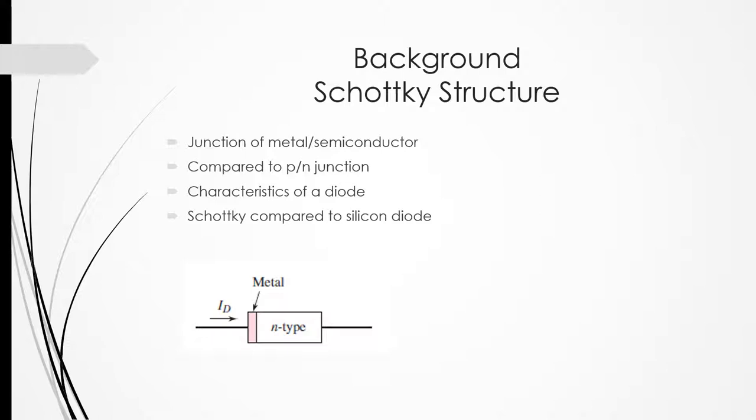This has various advantages that would benefit an optical detector. When compared to a PN junction, a PN junction current is carried by minority carriers, whereas a Schottky structure current is carried by majority carriers. Also, Schottky structures have a lower turn-on voltage compared to PN junction, which allows for faster switching. We can see this by these current voltage characteristics of a Schottky structure compared to a PN junction.